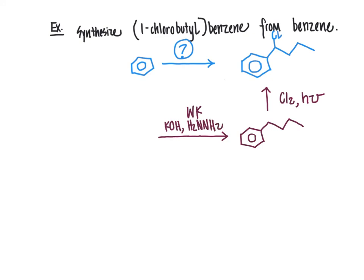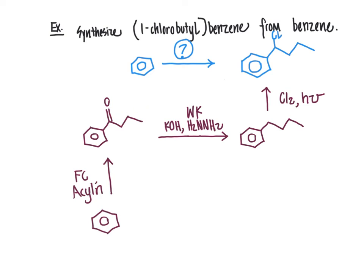The Wolff-Kishner reduction requires a starting material with a four-carbon chain and a carbonyl group directly attached to the aromatic ring. Working back one more step, we can make that via Friedel-Crafts acylation — reacting benzene with the corresponding acyl chloride (a four-carbon acyl chloride) in the presence of AlCl3 as catalyst. This gives the aryl ketone with no rearrangements, and is how we set up the Wolff-Kishner step.